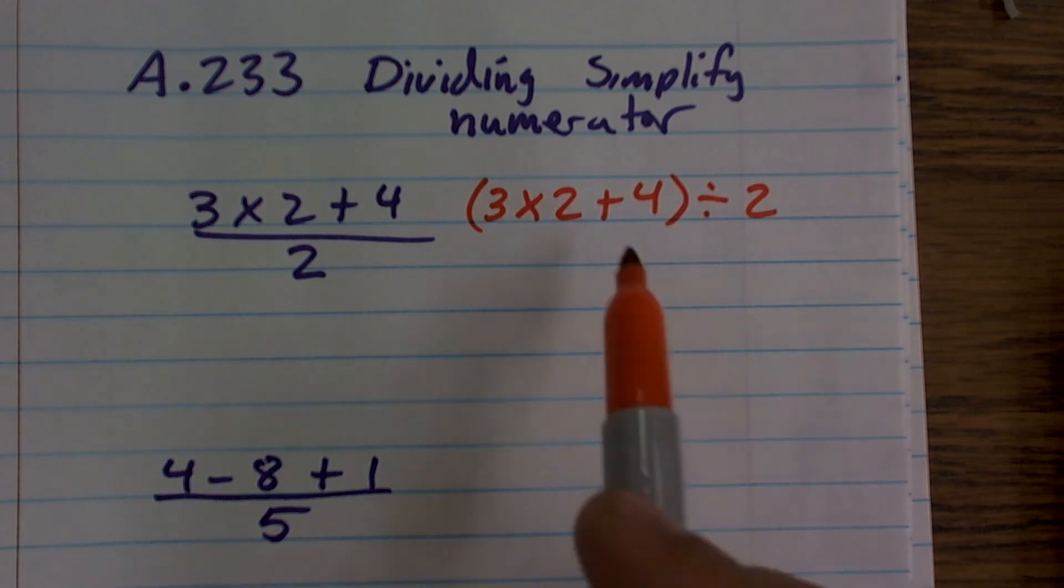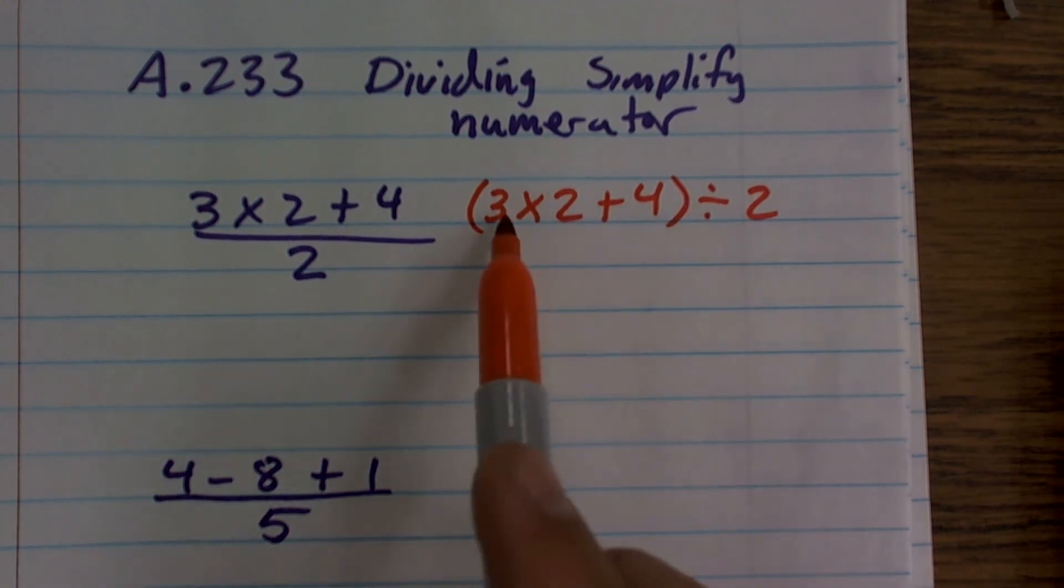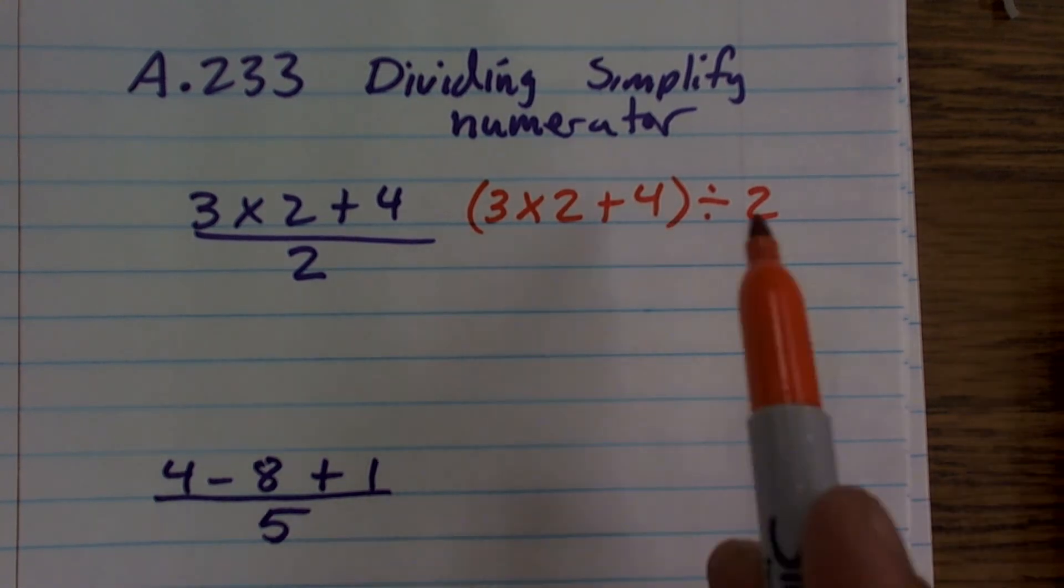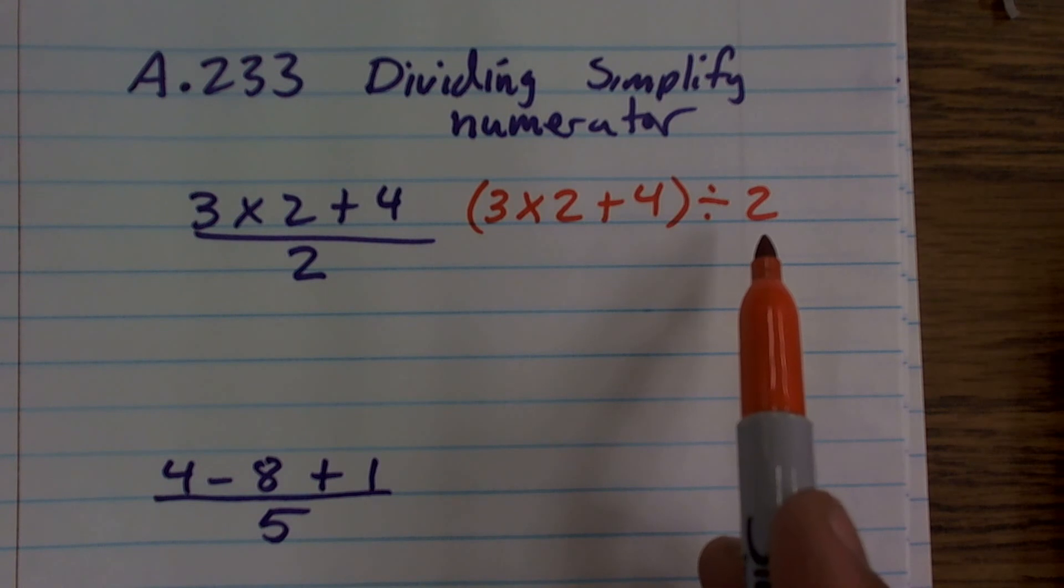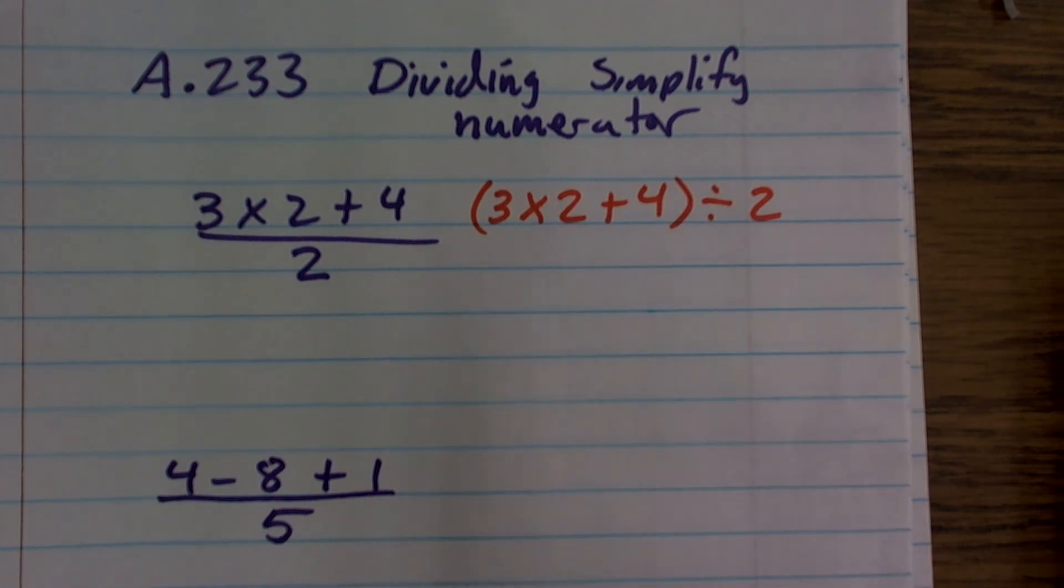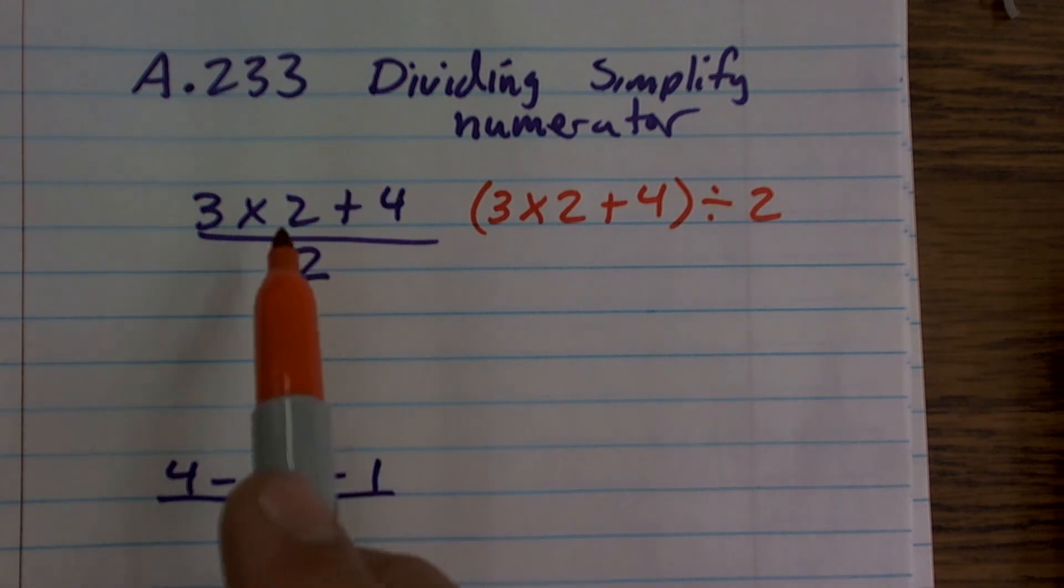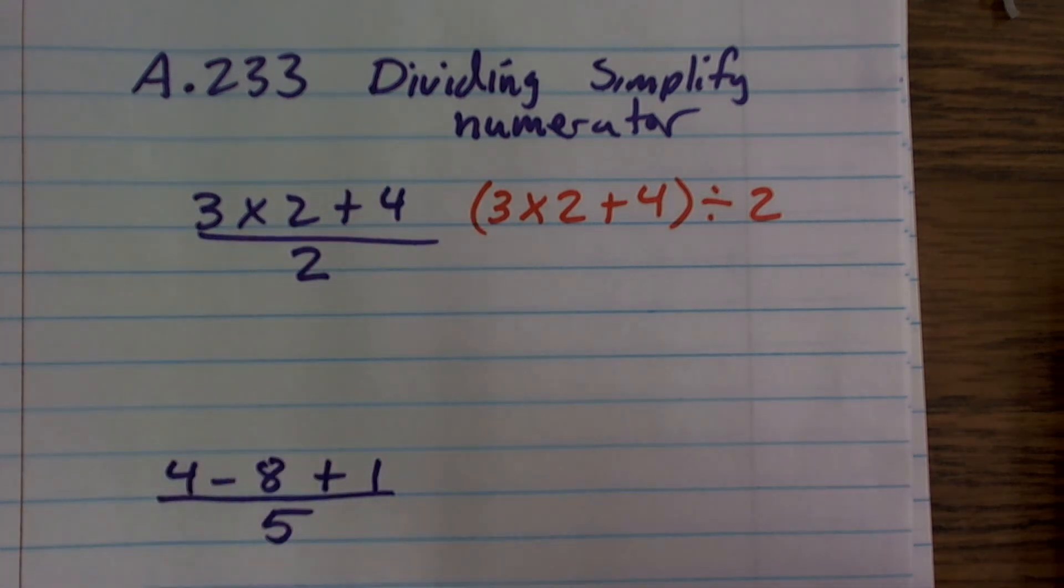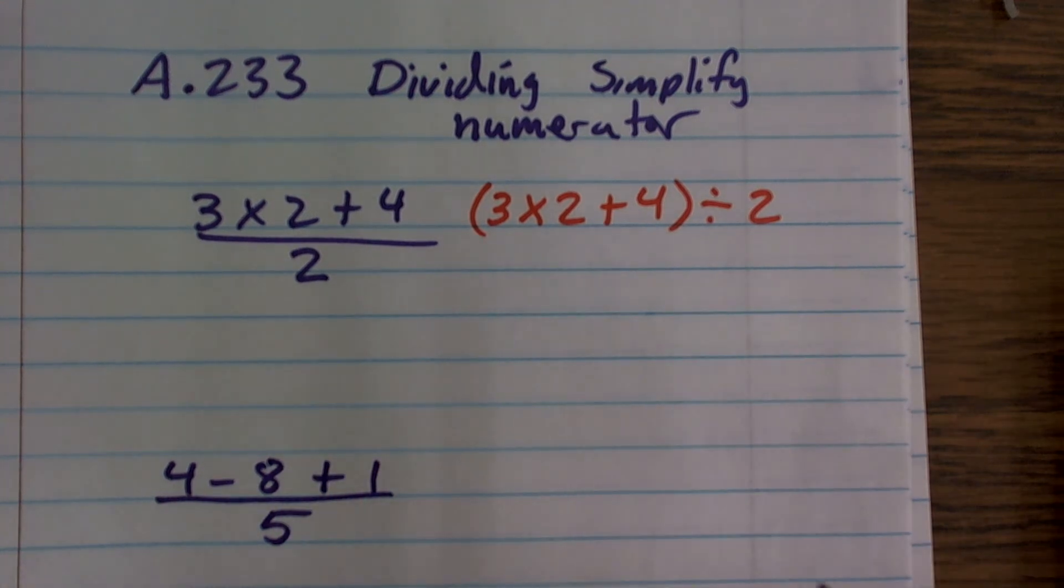So what that really means is I need to simplify my numerator first, then I can divide that by the denominator. It's very crucial that you understand that. A lot of students will maybe multiply by the 2, then divide it by the 2, and then add 4 or do something crazy like that. And we'll take a look at it. We'll see if that works, if that'll give us the same answer.